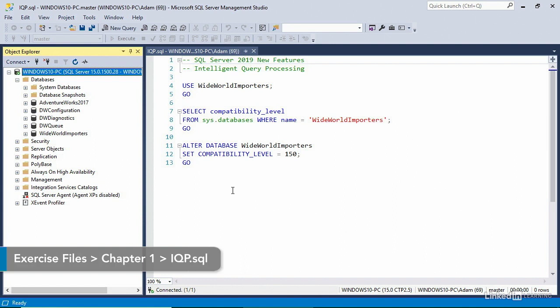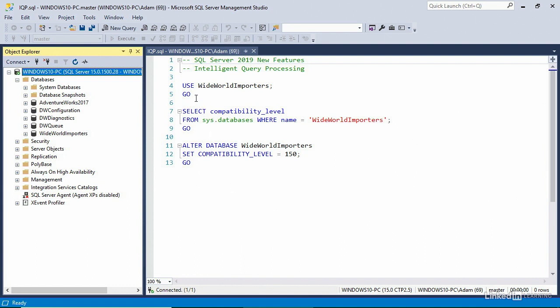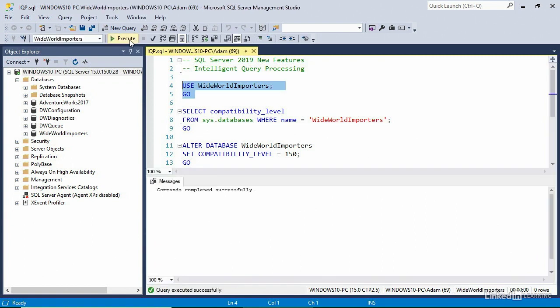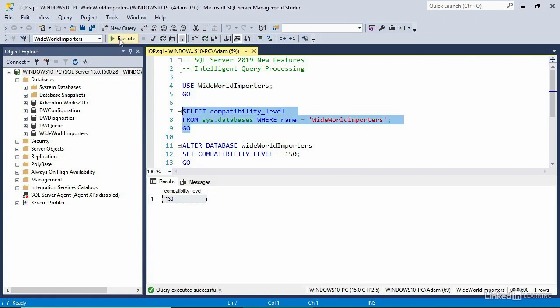In order to take advantage of these new Intelligent Query Processing features, you simply need to enable the new compatibility level on your databases. Here in SQL Server Management Studio, I'm going to use the Wide World Importers sample database. To see what the current compatibility level is, we're going to select the compatibility level column from sys.databases. I can see that we're currently at 130.